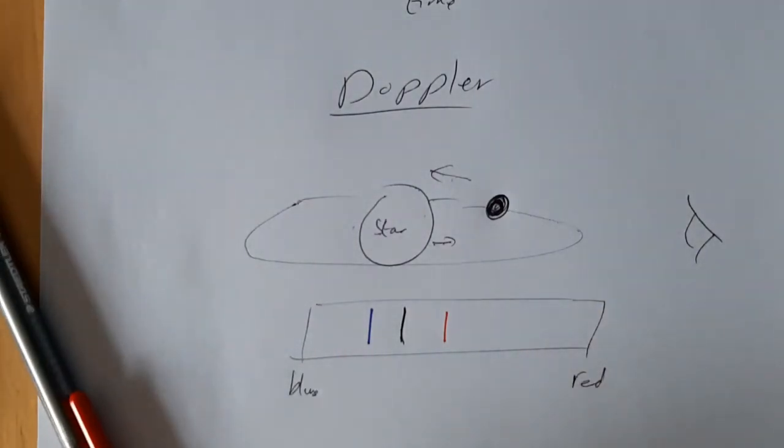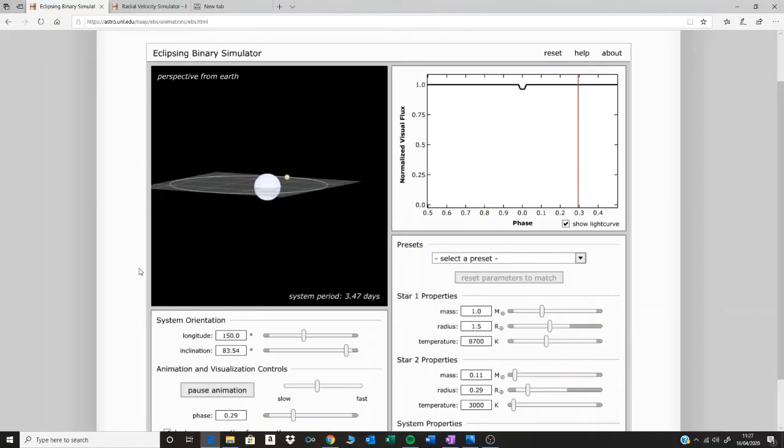We'll have a look now at exactly the same things in some simulations, in some animations. Let's have a quick look at this software simulation, and then we can understand a bit more detail exactly what's going on with the eclipsing method.